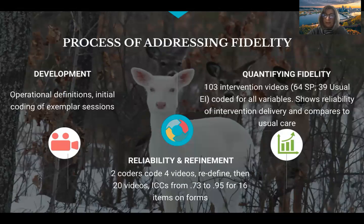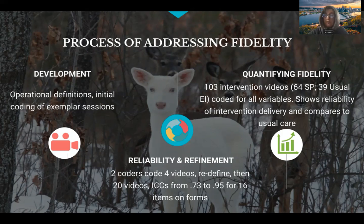The process of addressing fidelity included the development of the measure. We had to redefine our operational definitions after initial coding of exemplar sessions. We initially had two coders coding four videos, and then we refined the definitions, achieving intraclass correlation coefficients from 0.73 to 0.95 for 16 of the items on the forms. We were then able to quantify fidelity by measuring 103 intervention videos: 64 from the START-PLAY therapists and 39 from the usual early interventionists, coded on all variables.